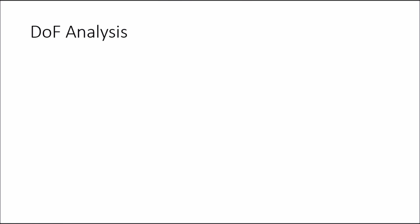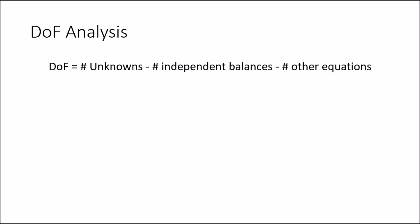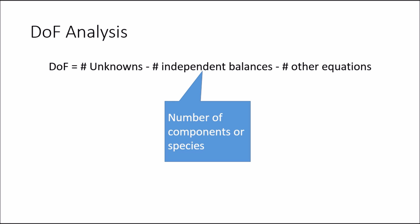Focusing on the material balance side, the number of independent balances we can write is always equal to the number of components present in that particular system. We can always write an independent balance for each species present. We can also write a total balance, but the total balance is not independent from the component balances. In other words, if we sum up all the component balances, that generates the overall balance, so it is dependent on all the component balances.